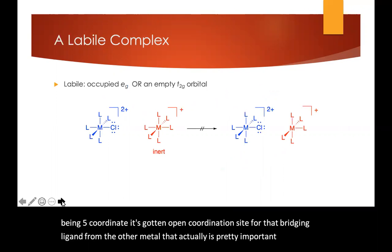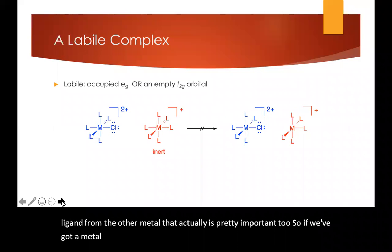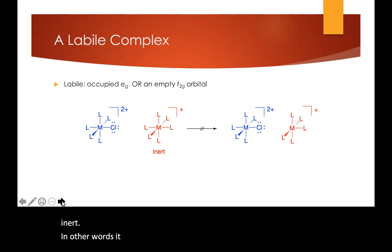So if we've got a metal complex that needs to receive this donor ligand and it's inert, in other words it either does not have an occupied eg or does not have an empty t2g orbital, those are factors that make complexes labile. If it has neither of those factors going on for it, it's going to be inert and it can't let go of one of its electrons or accept the bridging ligand from the other metal. And so none of this can happen.